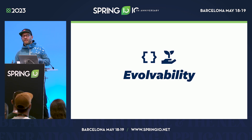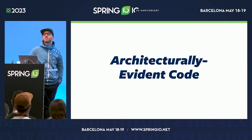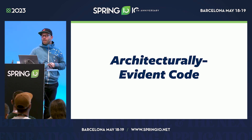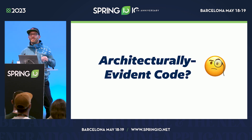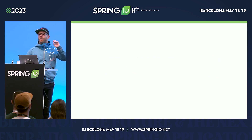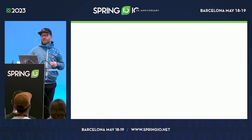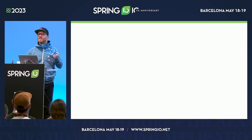The talk title says 'architecturally evident code.' Someone was immediately replying, 'what does that even mean?' So what is architecturally evident code? It's not a term I invented. When I did the research for the book, thinking about architecture and how to express that in software, you arrive pretty immediately at a guy named Simon Brown — you've probably heard of him for his C4 component model. He has references to a guy called George Fairbanks.